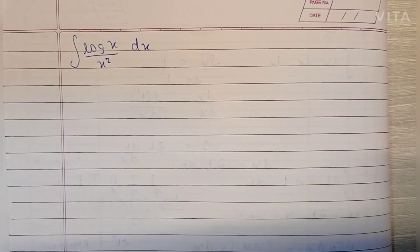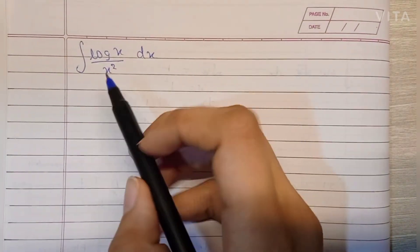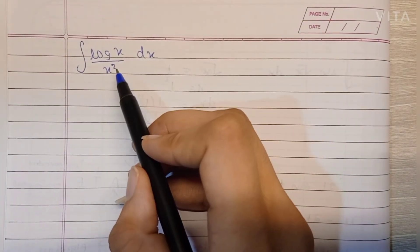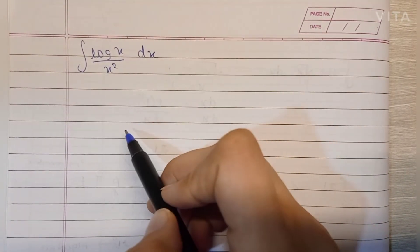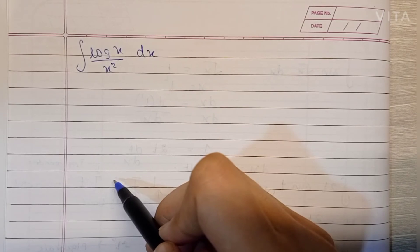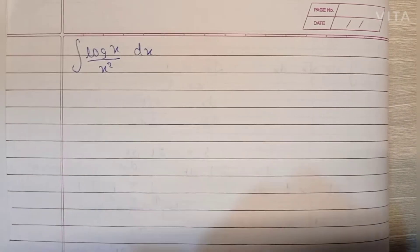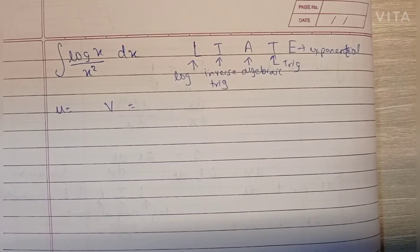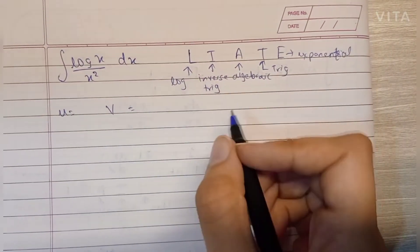Hey guys, welcome back to my channel. Today we'll be solving this question: the integral of log(x) upon x squared dx, and we'll be solving it by parts. So let's begin. The by-parts rule has the formula: